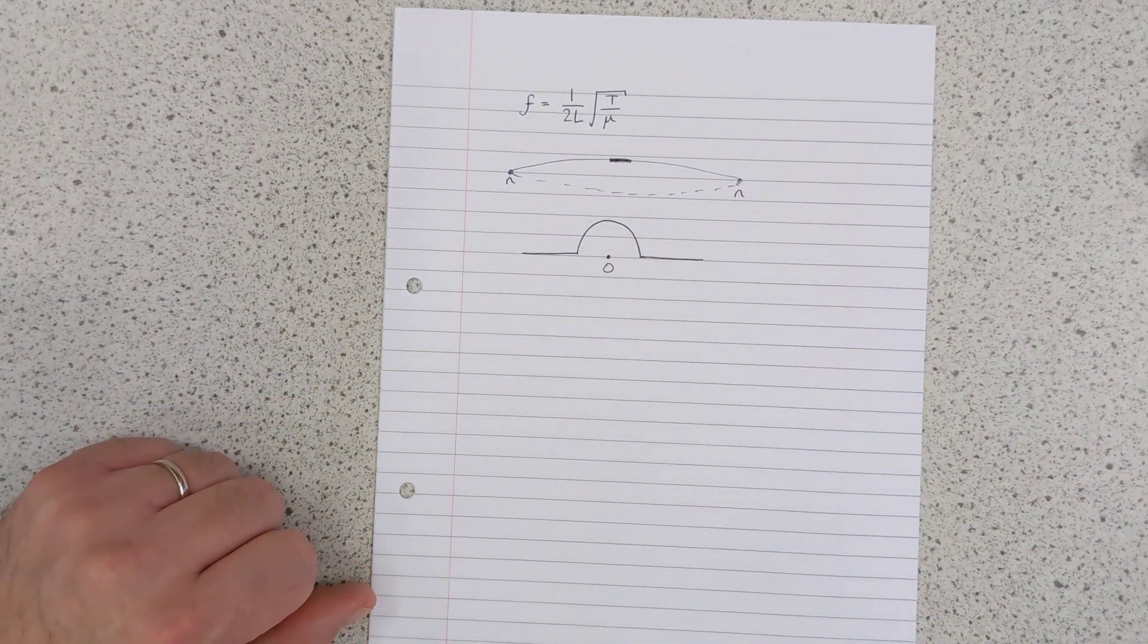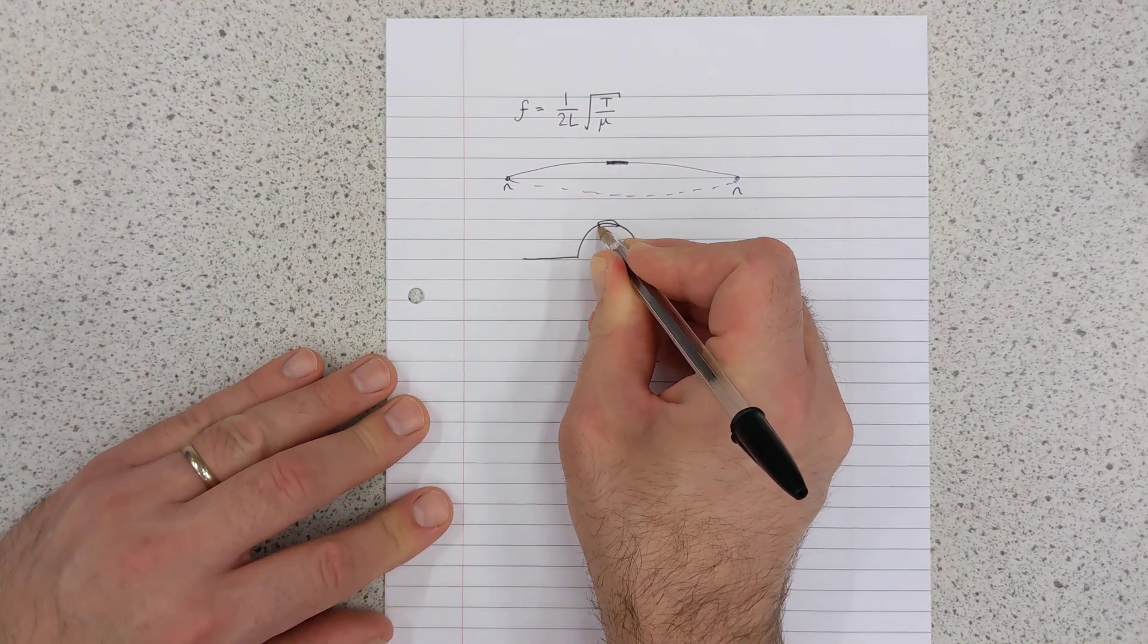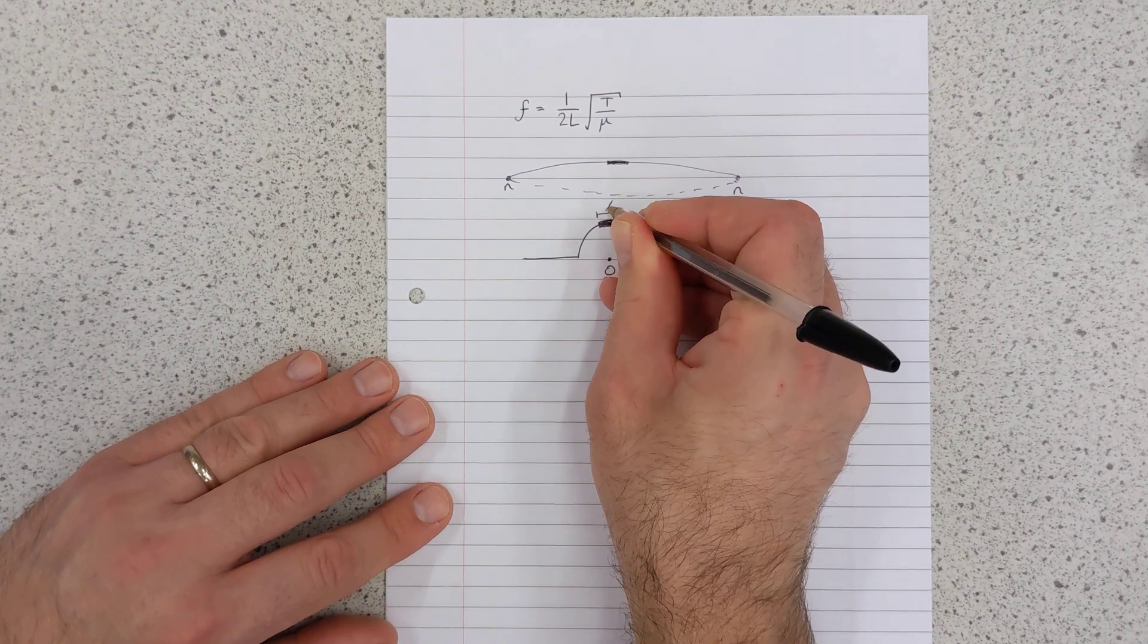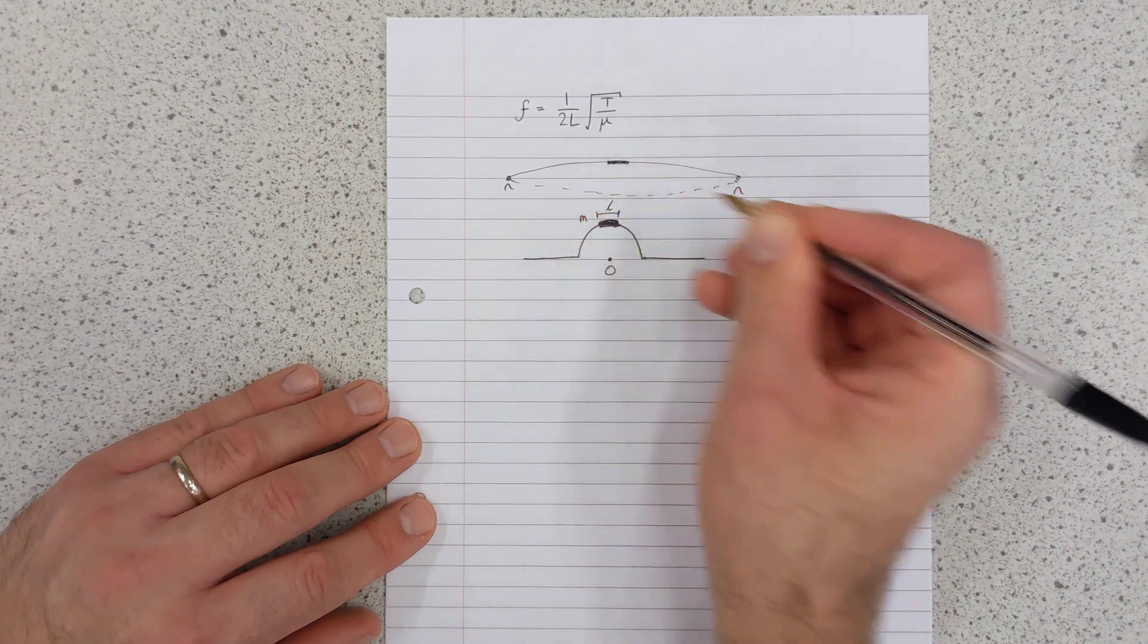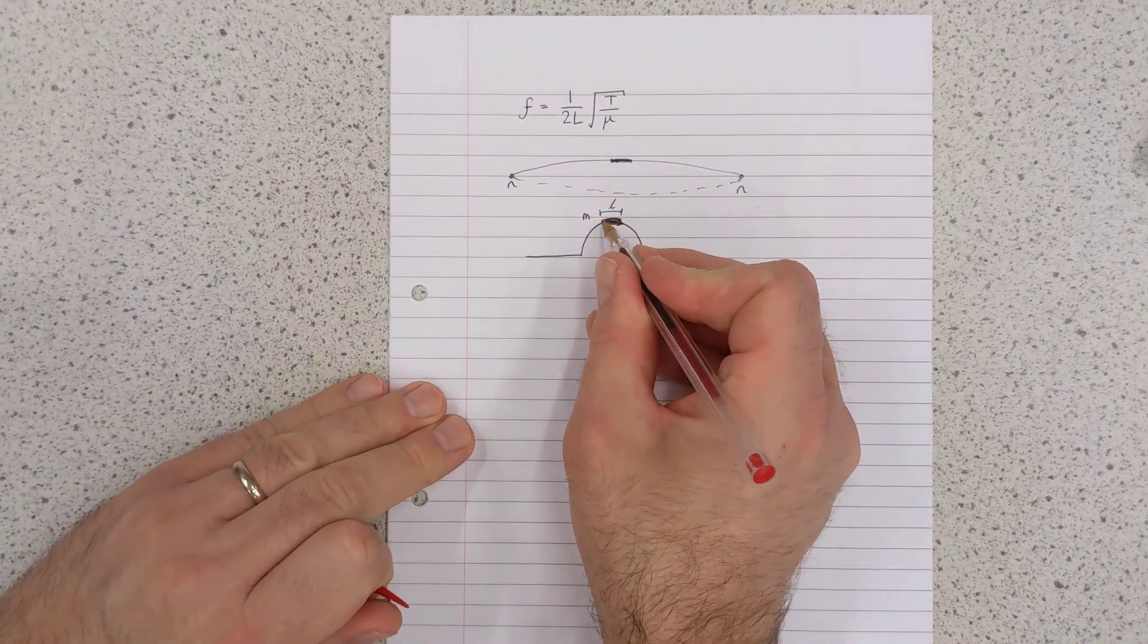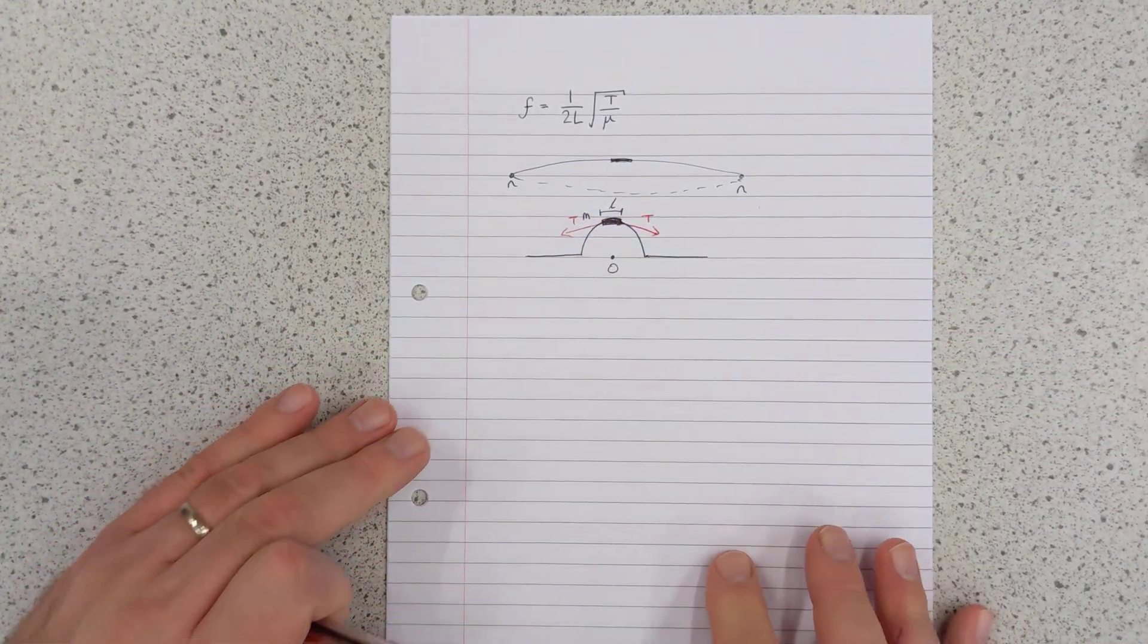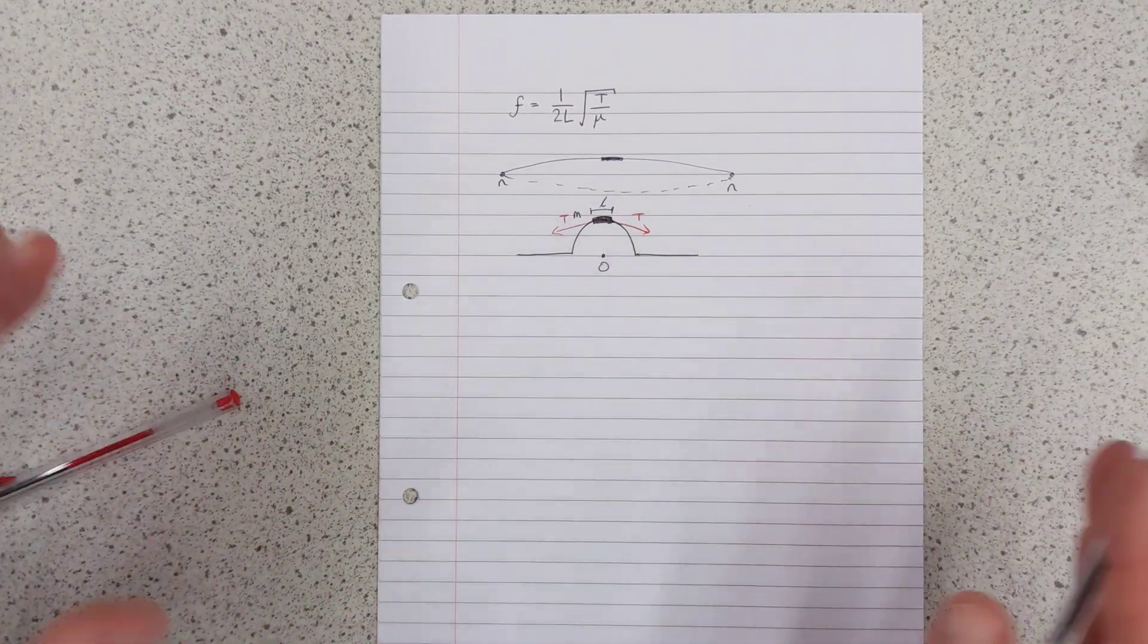So we've got O, the middle of our circle of string, and we've got a piece of string, which I'm just going to colour in so you can see it a bit more clearly, a piece of string there, which has a length lowercase l and a mass m. Now that piece of string is experiencing tension from the string next to it, and I'm using red to show that tension.